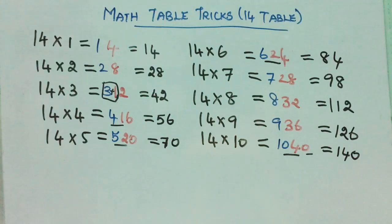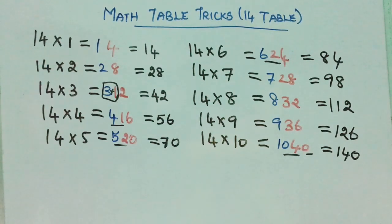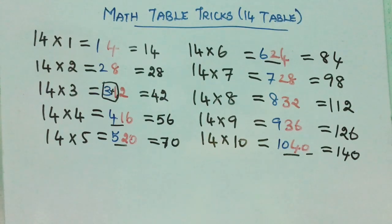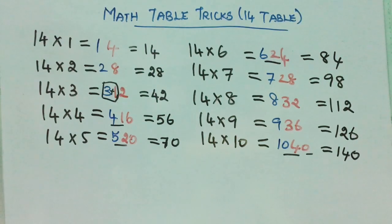Now you can check your answers with your 14 table: 14 ones are 14, 14 twos are 28, 14 threes are 42, 14 fours are 56, 14 fives are 70, 14 sixes are 84, 14 sevens are 98, 14 eights are 112, 14 nines are 126, 14 tens are 140. Similarly, I will write from 14 elevens are to 14 twenties are.